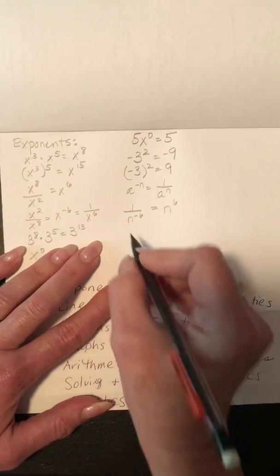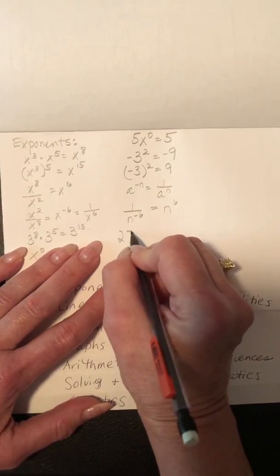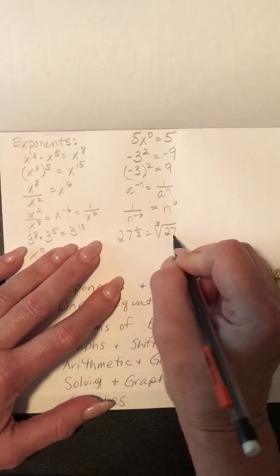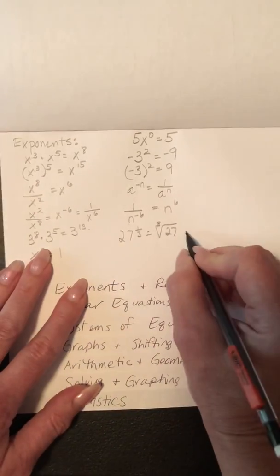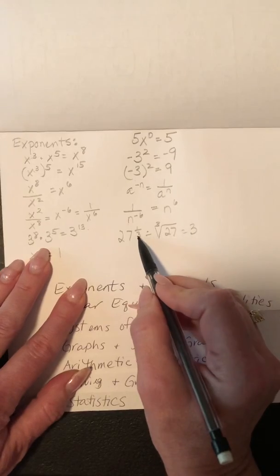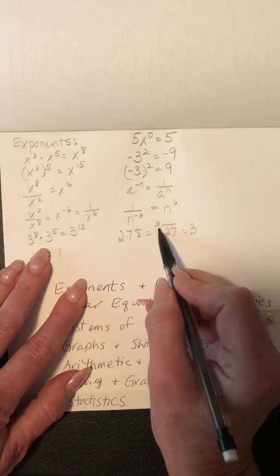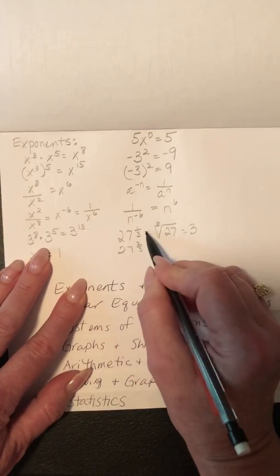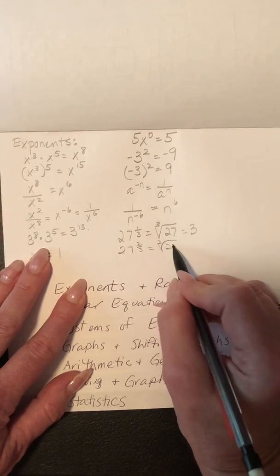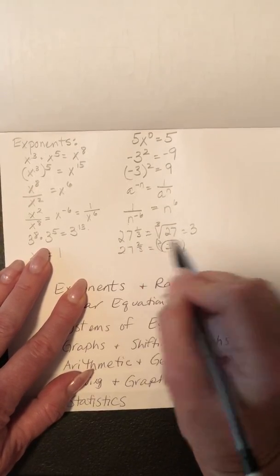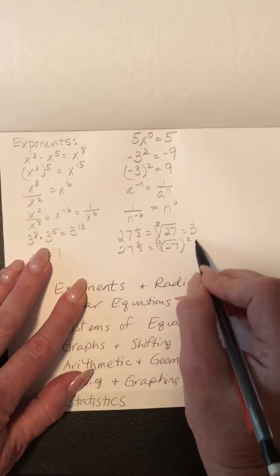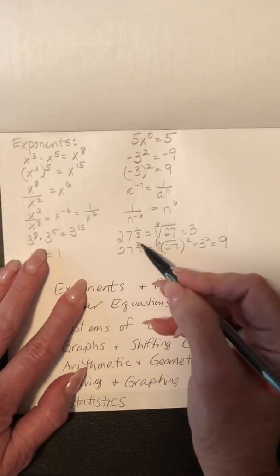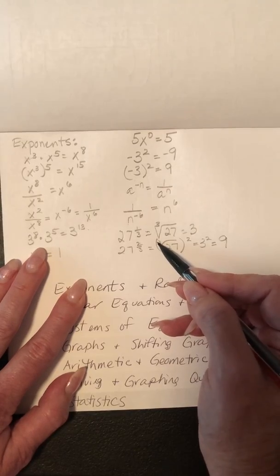Whenever you have something like 27 to the 1/3, that's the same as the cube root of 27 — meaning what times what times what equals 27, which is 3. The denominator tells you what root to take; that's called the index. So 27 to the 2/3 means you take the cube root of 27 to get 3, then square it to get 9. The numerator is the exponent and the denominator is the index.